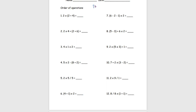So we have P, E, M, D, A, and S. P is parentheses, E is exponents, M is multiplication, D is division, A is addition, and S is subtraction.